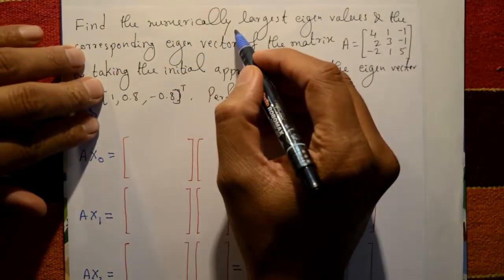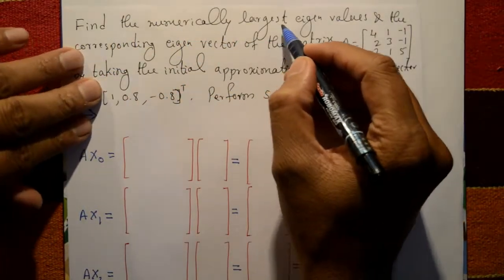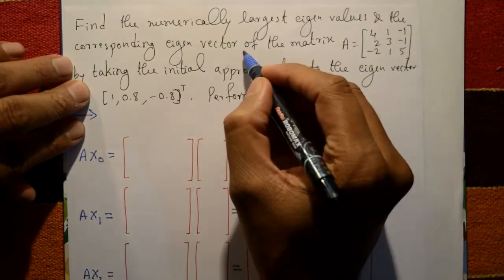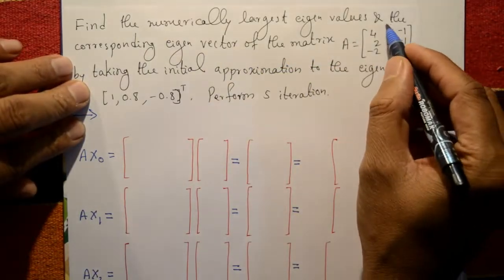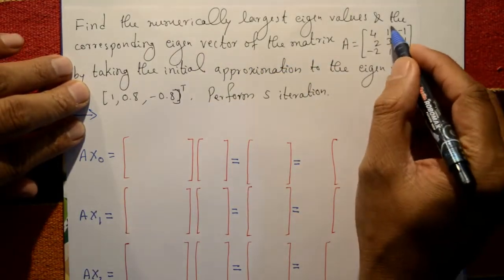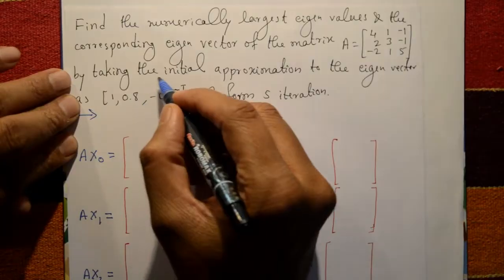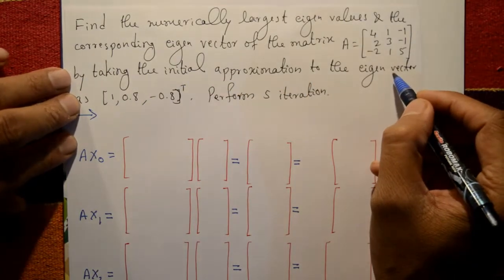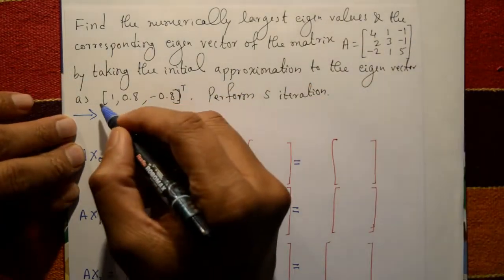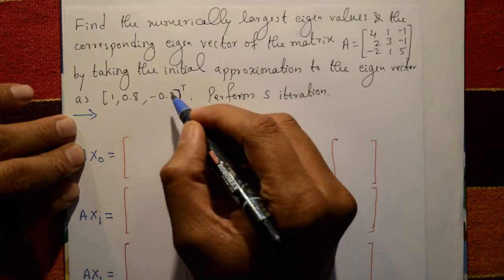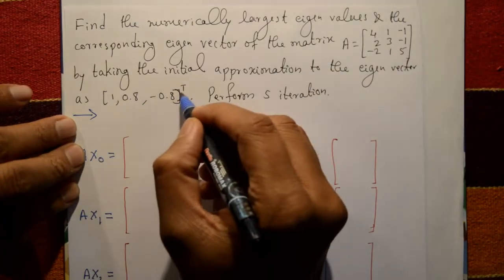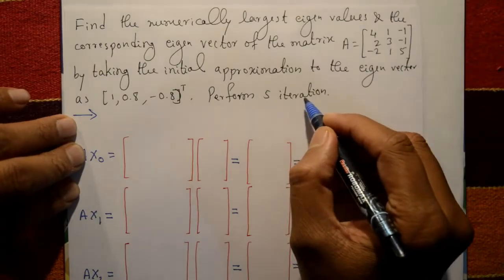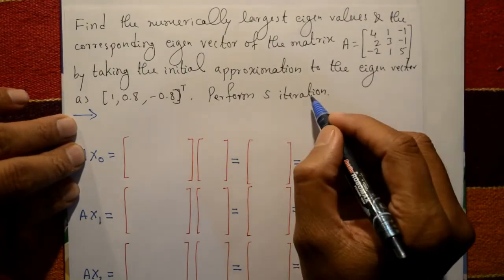Find the numerically largest eigenvalue and corresponding eigenvector of matrix A, which is a given square matrix. Take the initial approximation to the eigenvector as x0 = [1, 0.8, -0.8]ᵀ. Perform 5 iterations only.